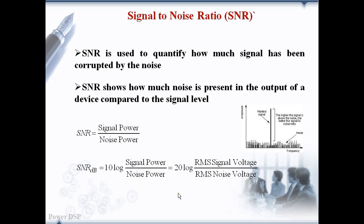Power is the square of the voltage so we can write SNR as 20 log of RMS signal voltage divided by RMS noise voltage.